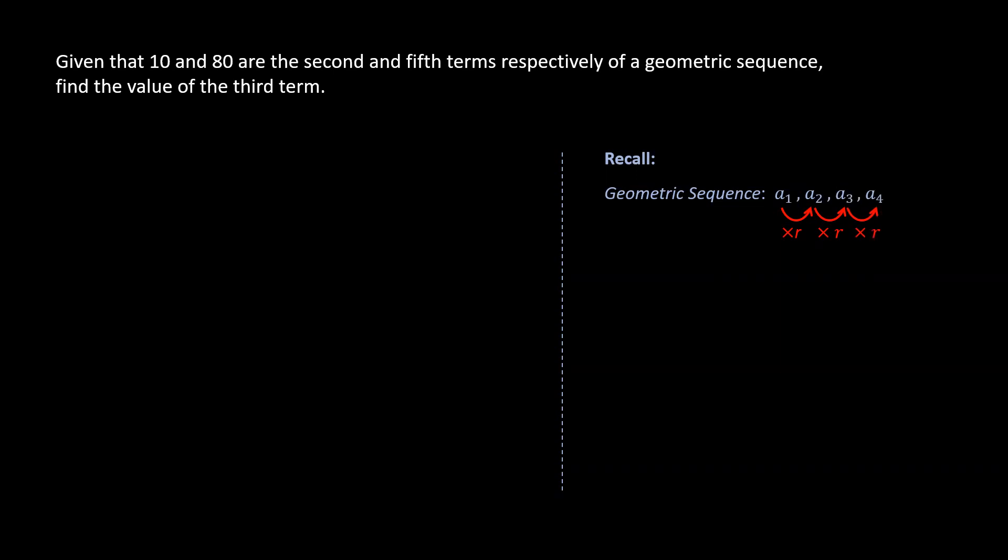And the final term or the nth term can be obtained by multiplying the first term by r to the power of n minus 1. So in general, the explicit formula for the nth term of a geometric sequence is given by a1 multiplied by r to the power of n minus 1.